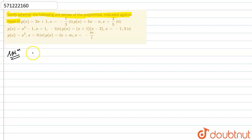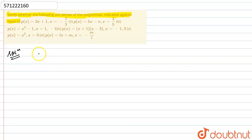The zero of the polynomial means the value of x such that if you put it in the given polynomial and find p(x), it should come out to be 0. So we can say that that x is the zero of the polynomial. Now I will check this condition for each of these given polynomials.